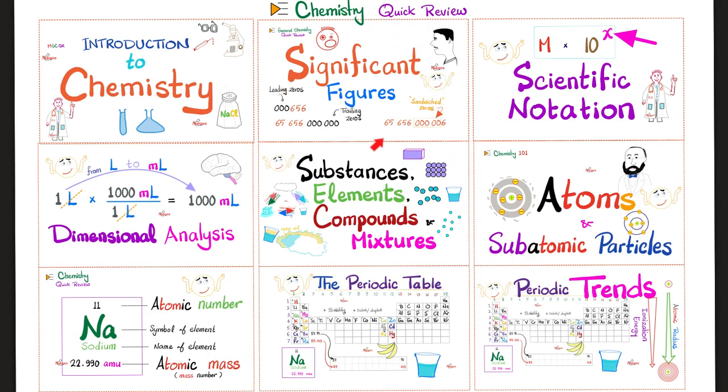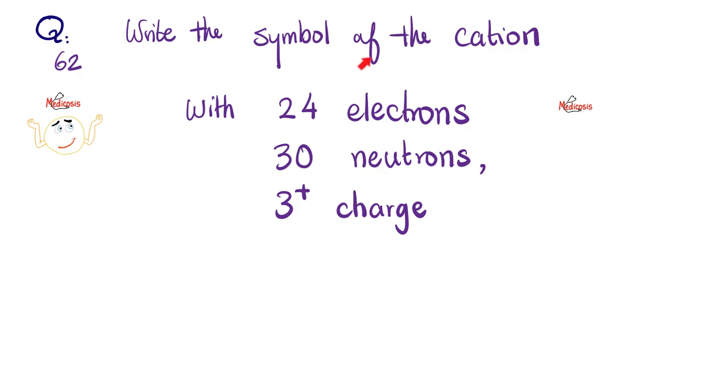Please watch the videos in this chemistry quick review playlist in order. Let's start by answering the question of the previous video. Write the symbol of the cation that has 24 electrons, 30 neutrons, and 3 plus positive charge. Please pause and try to answer this yourself.